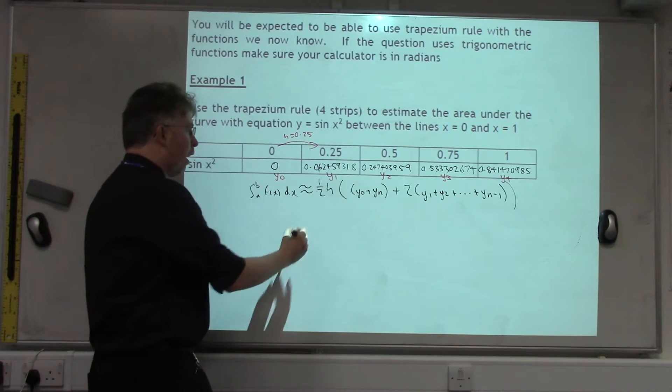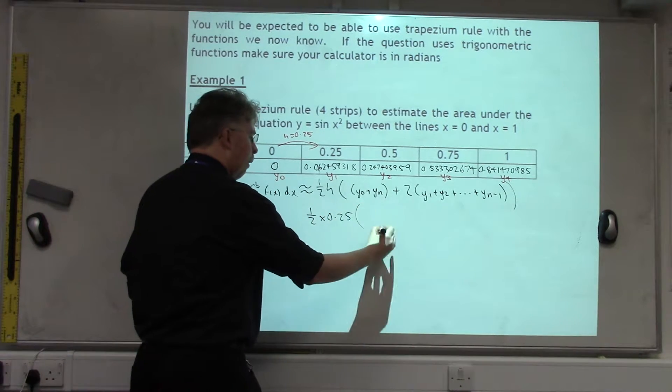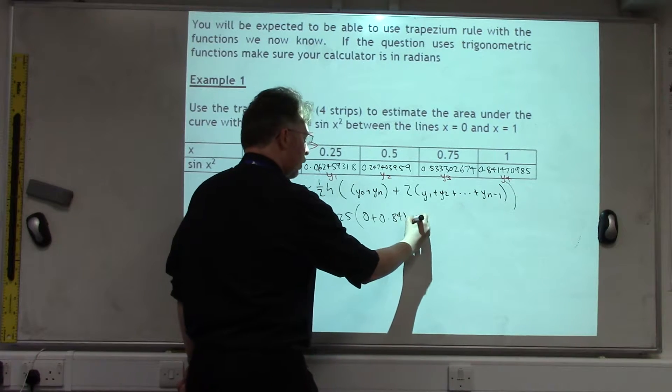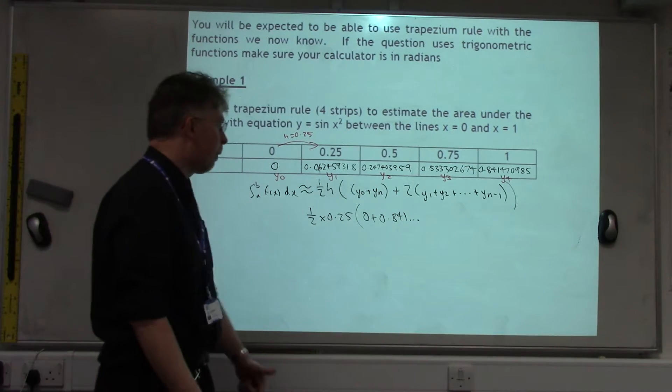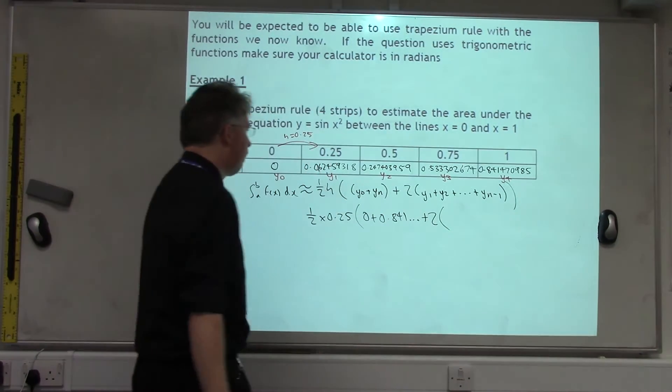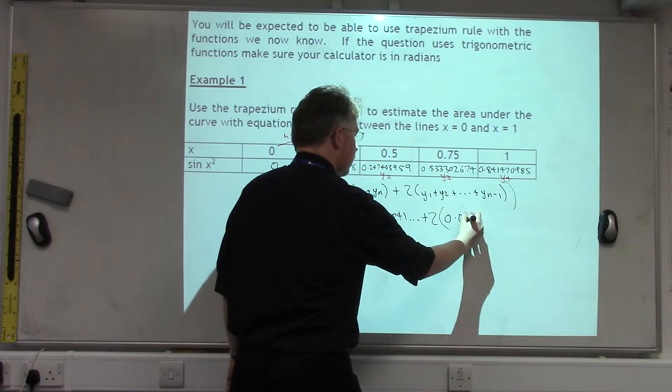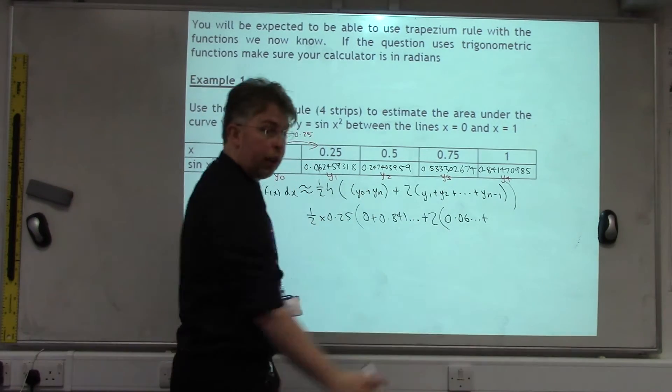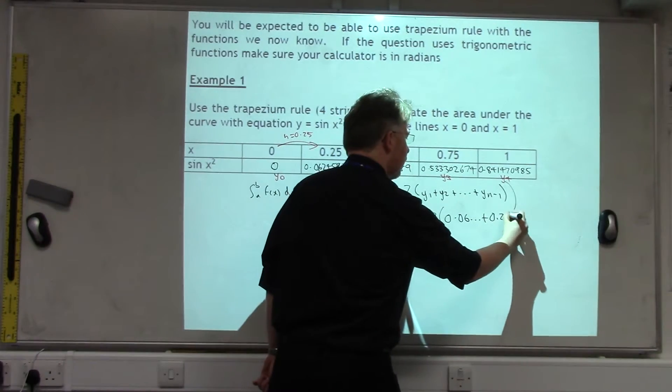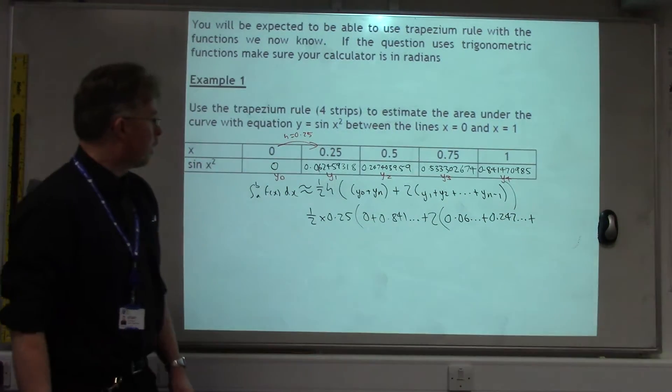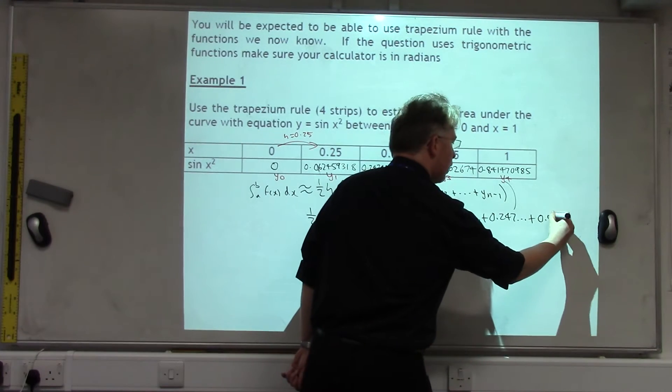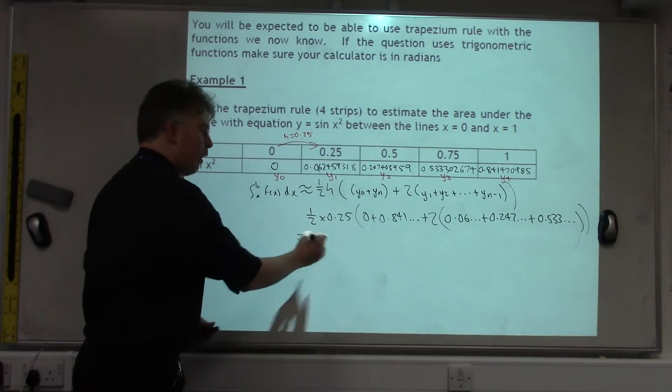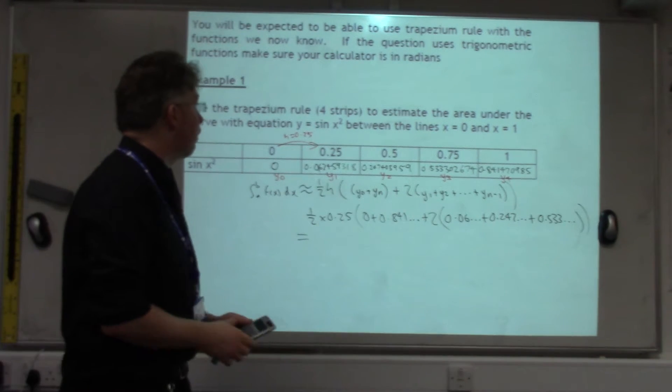So sticking to the formula: half times 0.25, open bracket, first y plus last y, which is 0 plus 0.841. I'm going to put dot dot dot rather than writing out the decimal each time, just to make clear which number I'm using. Plus 2 times, open bracket, 0.06 dot dot dot plus 0.247 dot dot dot plus 0.533 dot dot dot. So it's first plus last, plus 2 times the rest added up. And we've got 2 brackets to close. Stick that all into a calculator and calculate and we get our estimate for the trapezium rule.